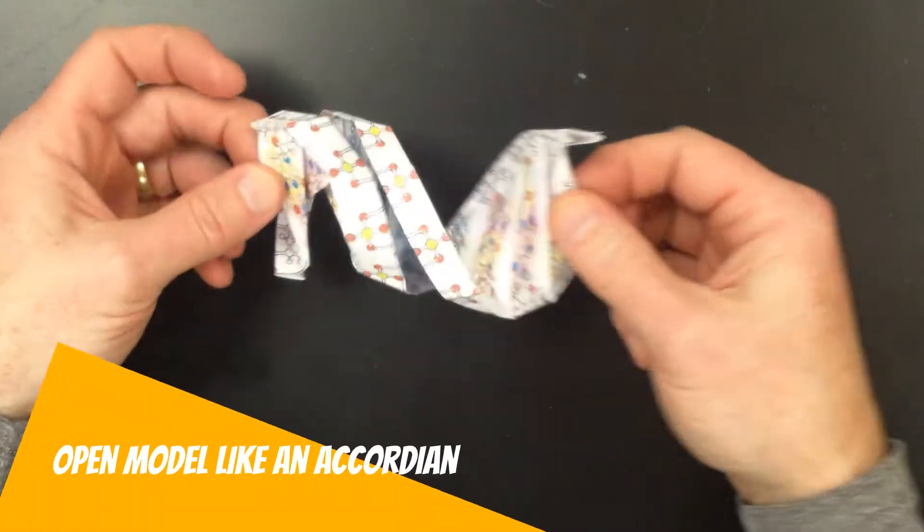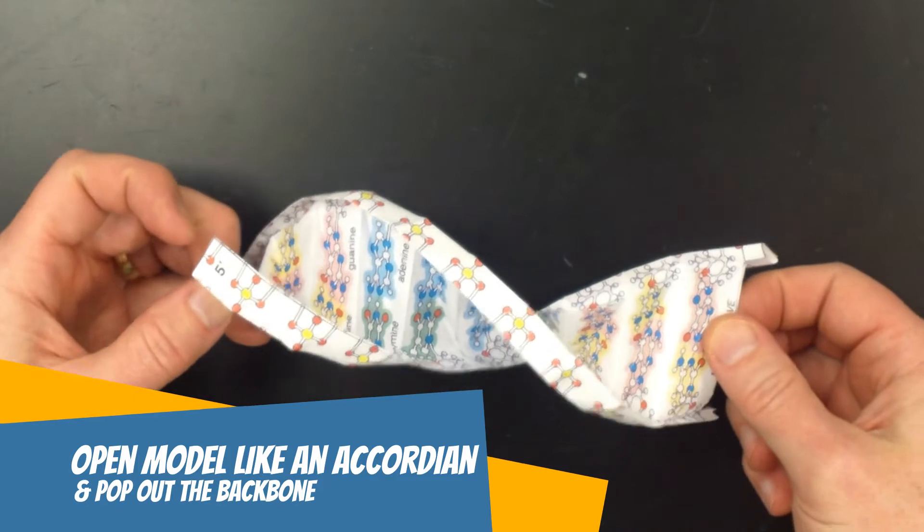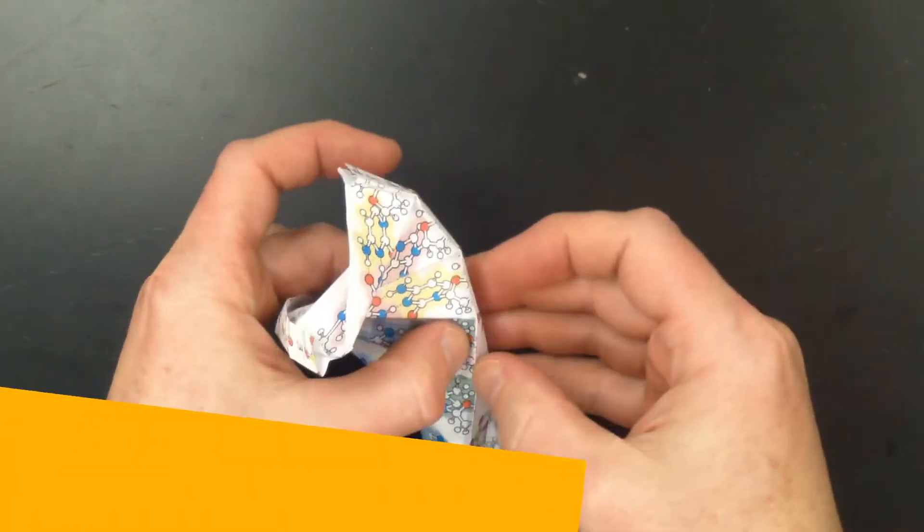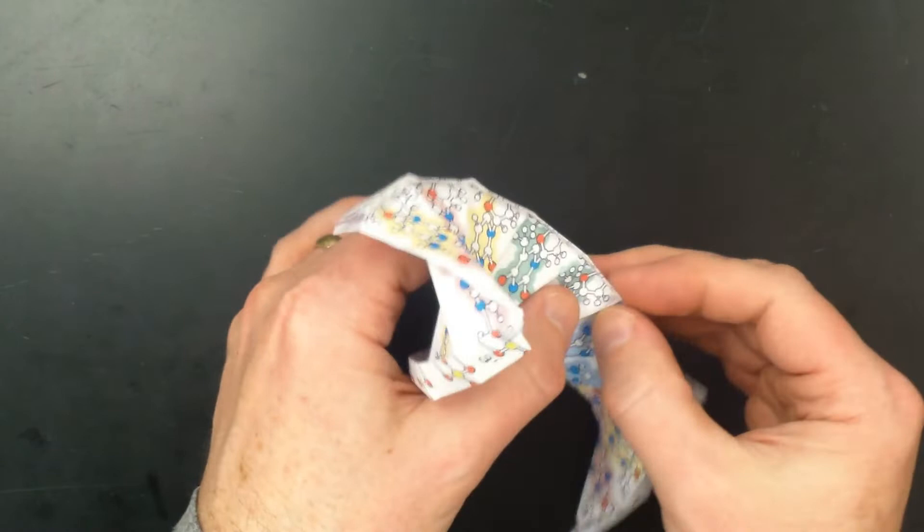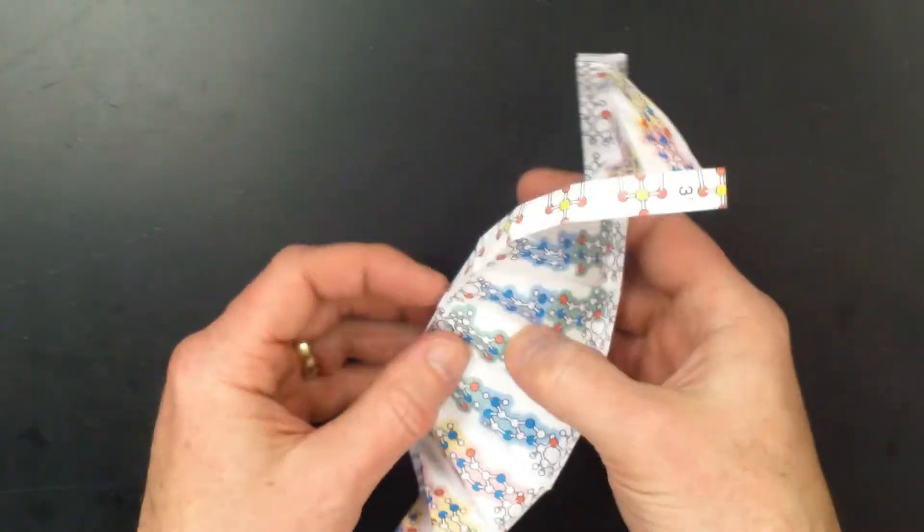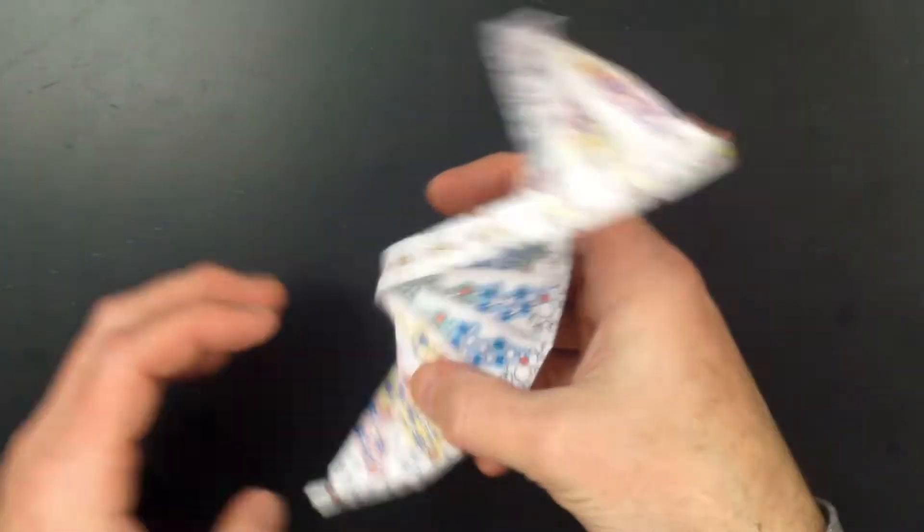Last, open the model like an accordion and pop out the backbone on each side. The final model is a right-handed double helix.